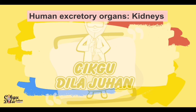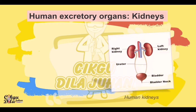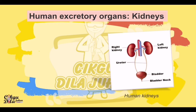Our next human excretory organ is the kidneys. This is the human kidneys — we have two kidneys, the right kidney and left kidney. We have the ureter where urine moves to the bladder, and we have the bladder neck.